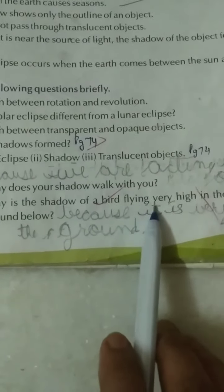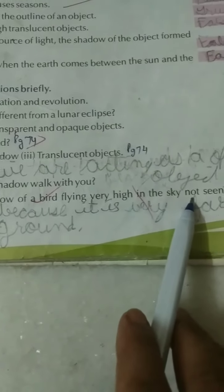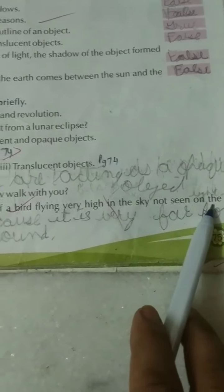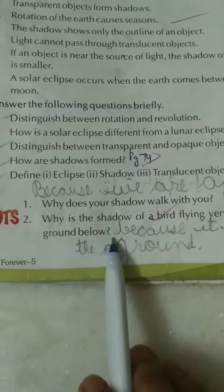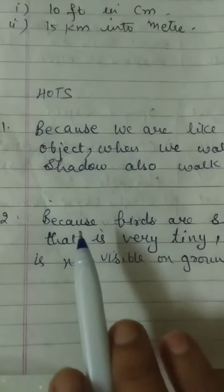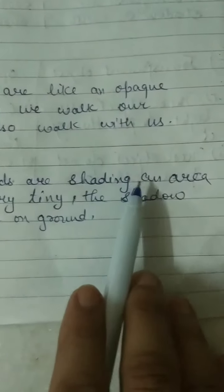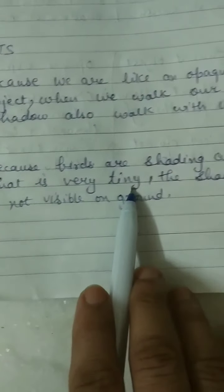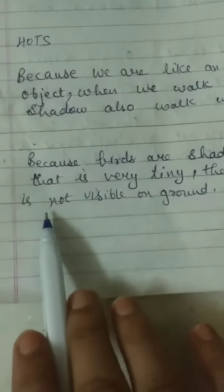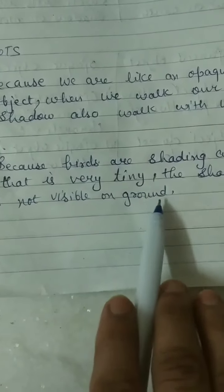Second: Why is the shadow of bird flying very high in the sky not seen on ground below? Because birds are shading an area that is very tiny. The shadow is not visible on ground.